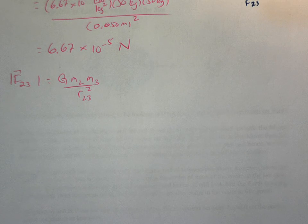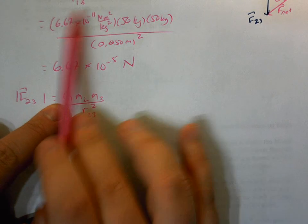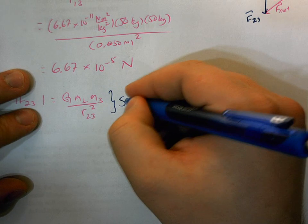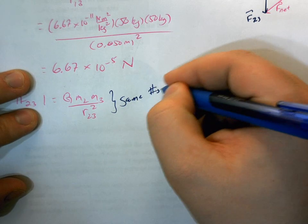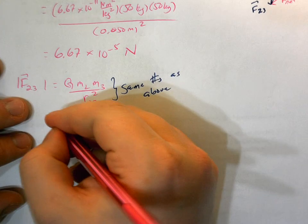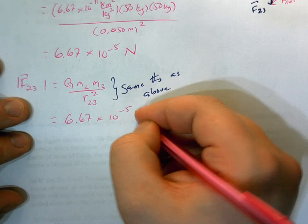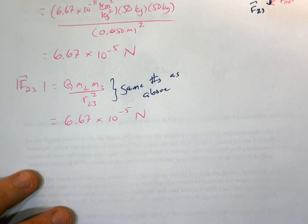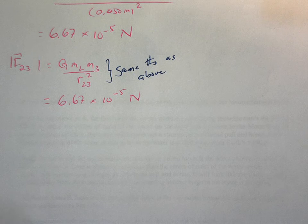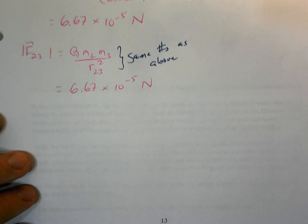And then we're going to square that. Basically, we're redoing this calculation here. So I'm just going to say same numbers as above. So without re-punching that into my calculator, we also know that this is 6.67 times 10 to the minus 5 newtons. Easy for us. Don't do all these extra calculations that you really don't need to do.